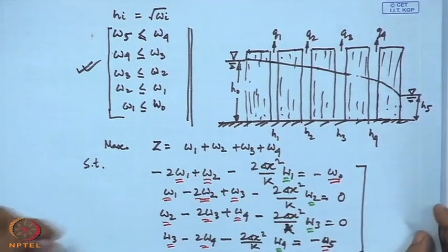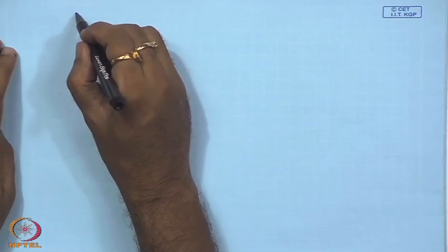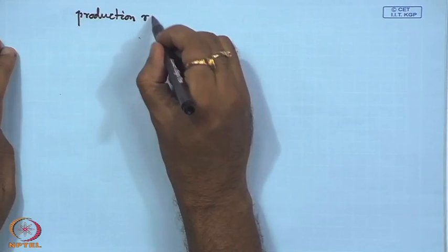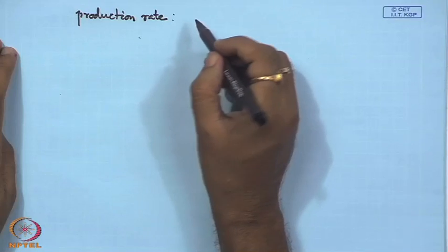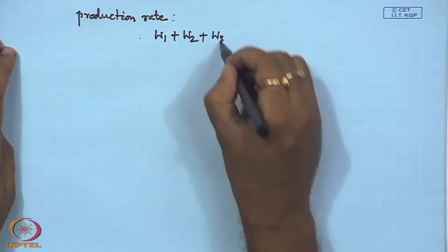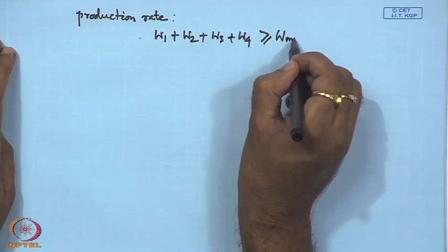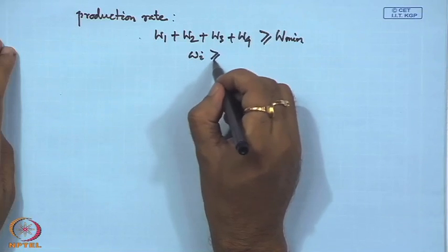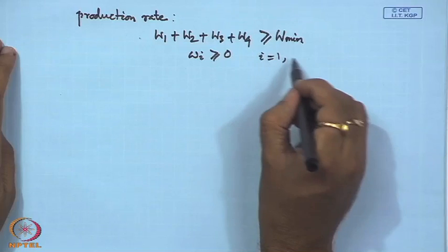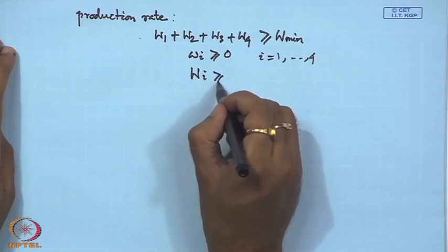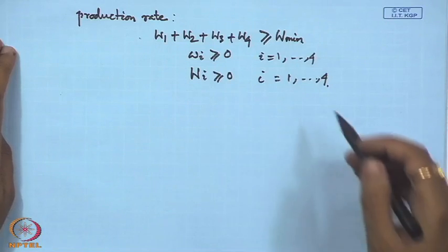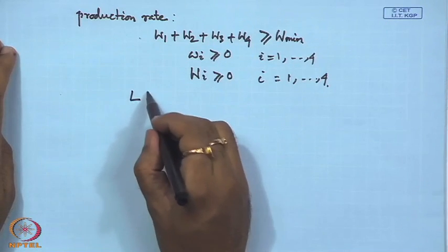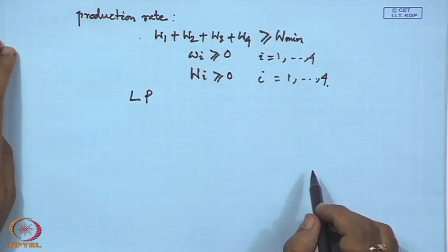The binding constraints are the finite difference equations, and the additional constraints enforce that down-gradient hydraulic head cannot exceed up-gradient values. Constraints related to production rate require: Σ W_i ≥ W_min; w̃_i ≥ 0 for i = 1 to 4; and W_i ≥ 0 for i = 1 to 4. All objectives and constraints are linear, so this can be solved directly using linear programming.